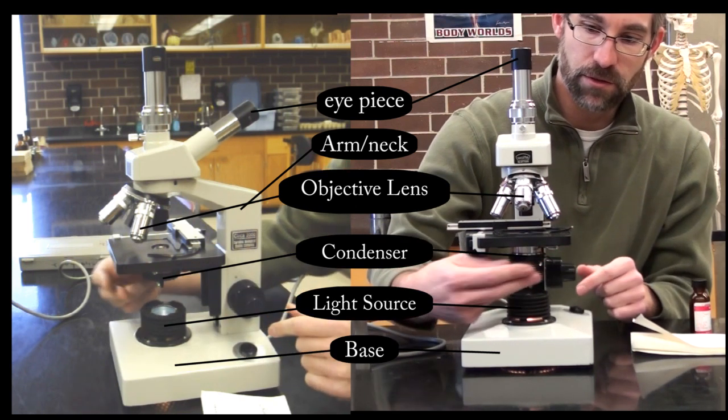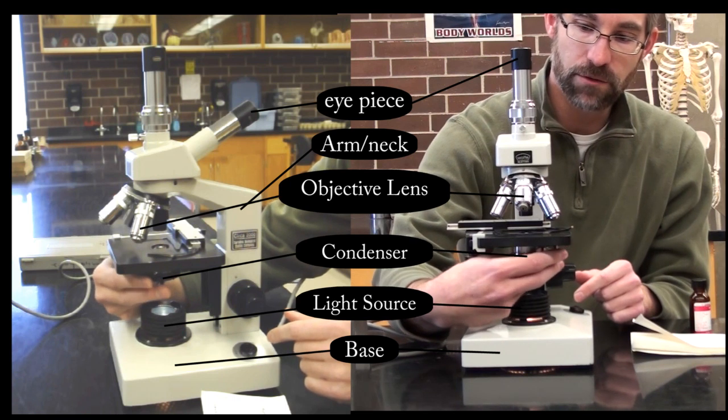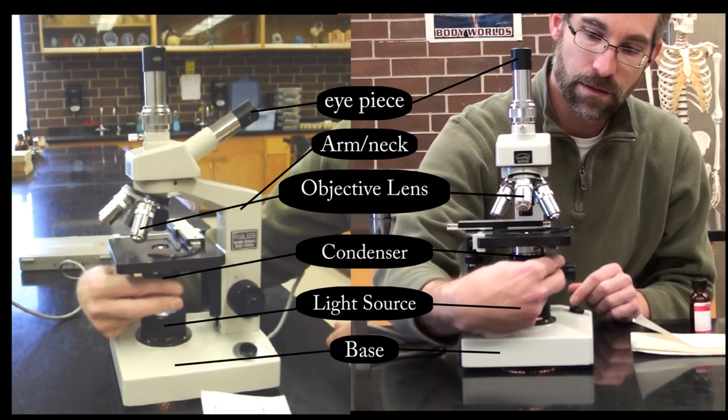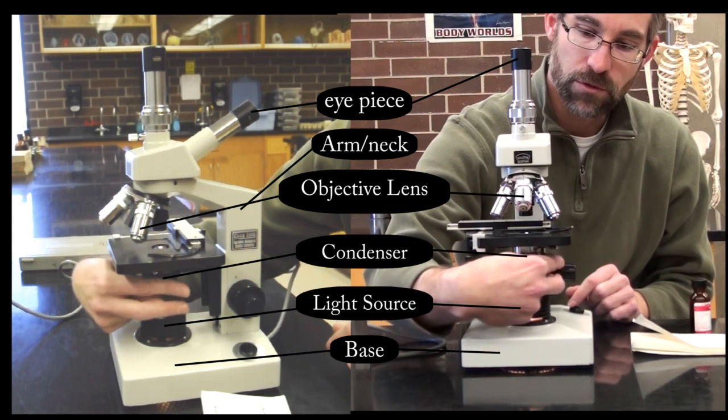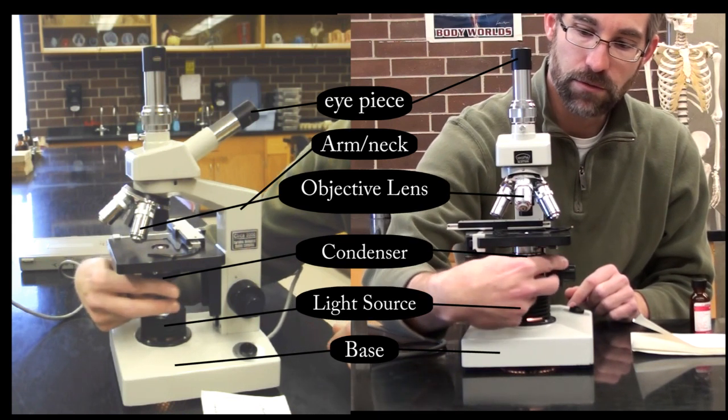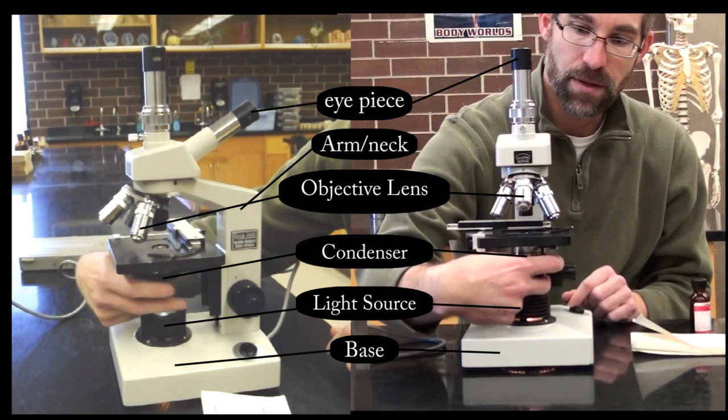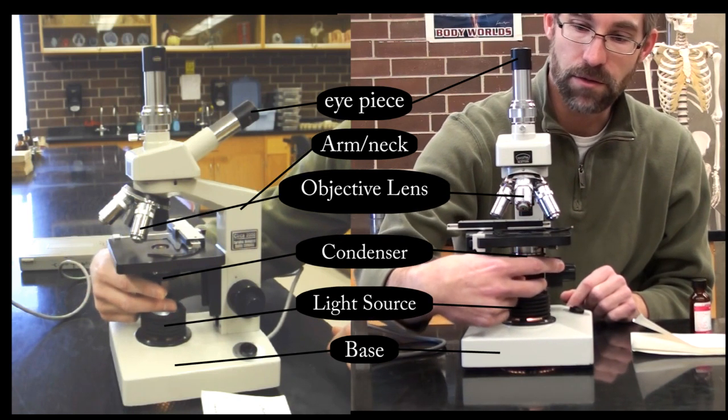With this condenser, we can adjust how much light goes through it by adjusting what we call an iris. We've got a little lever which will allow us to open and close and allow different amounts of light through. This will be important based on the type of lens that we will be using.